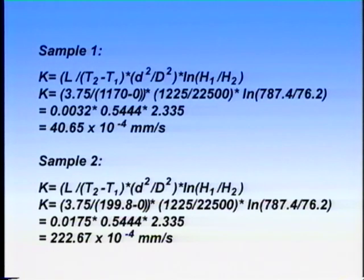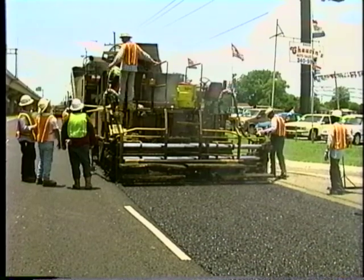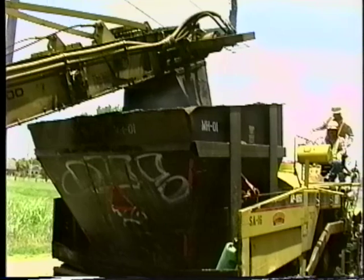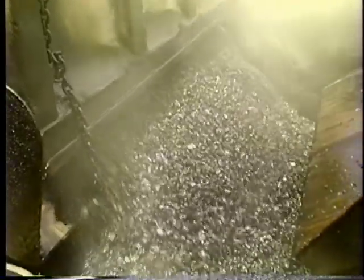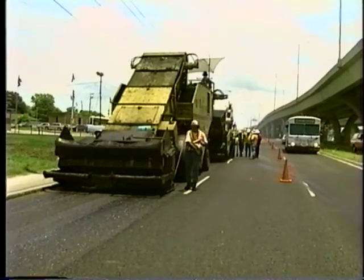Sample 1 fell under 125 times 10 to the minus 4 millimeters per second, so it is a good sample. Sample 2 was over the allowed number, so it is too permeable. When plotting time versus height of the fall of water for each sample, the drop in water will be slower as more time passes. Permeability is a very important consideration when looking at hot mix asphalt. A mixture must have air voids high enough to prevent rutting, but the air voids cannot be so great as to allow excess water into the mixture. If the sample is permeable, water will enter the mix and stripping will occur.